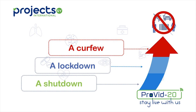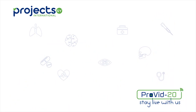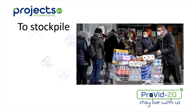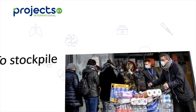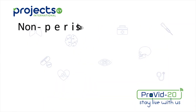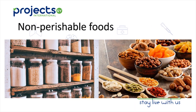Now, let's talk about us as people. What is the first thing we do when we hear of pandemics? The first thing is to stockpile, which means to gather large amounts of something. But what do we exactly stockpile — burger or pizza? No. We stockpile non-perishable foods, which are foods that can be stored for a long time without being spoiled, like rice, beans, and nuts.